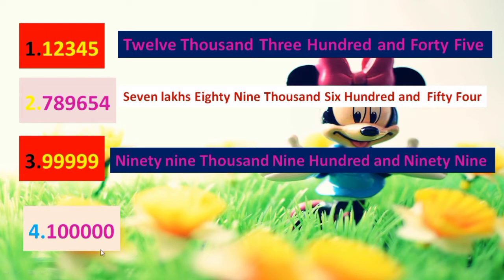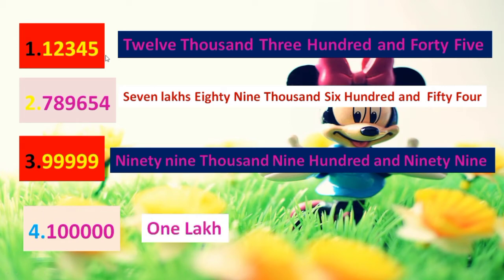See the last one: ones, tens, hundreds, thousands, ten thousands, lakhs. The number name of this one is one lakh. So the answers are: twelve thousand three hundred and forty-five; seven lakhs eighty-nine thousand six hundred and fifty-four; ninety-nine thousand nine hundred and ninety-nine; one lakh.